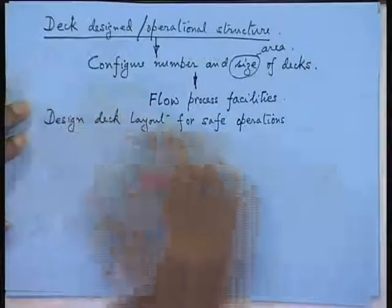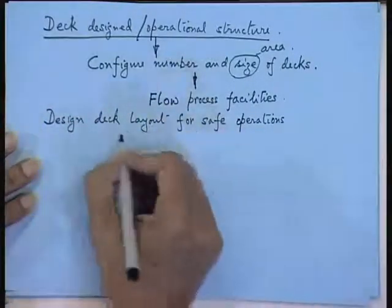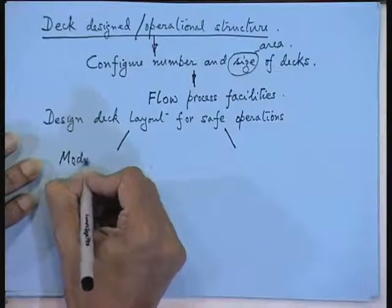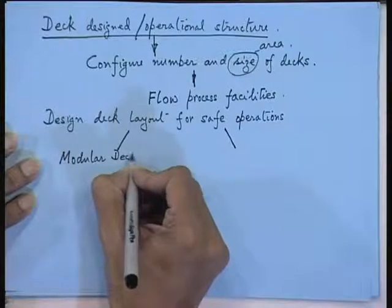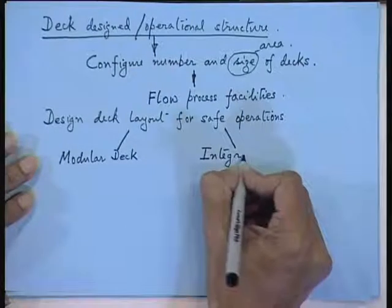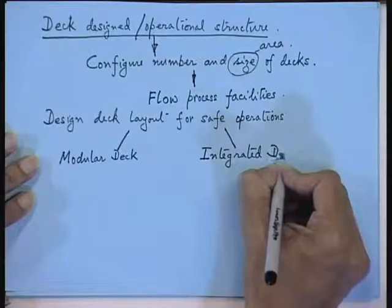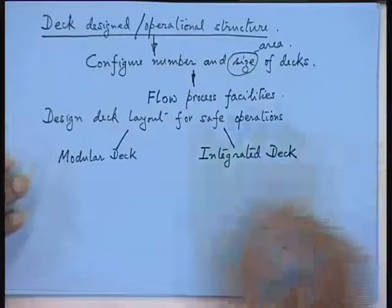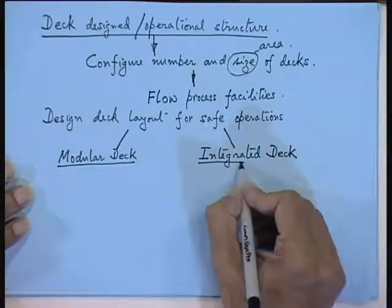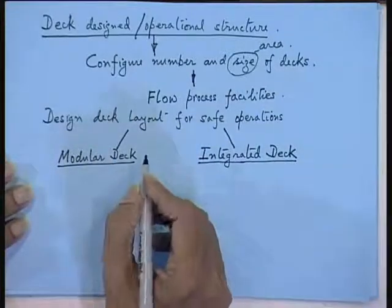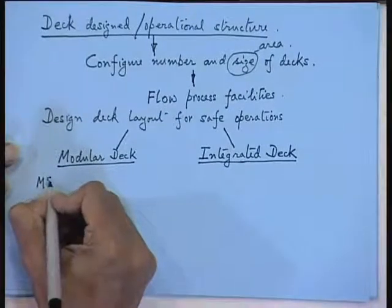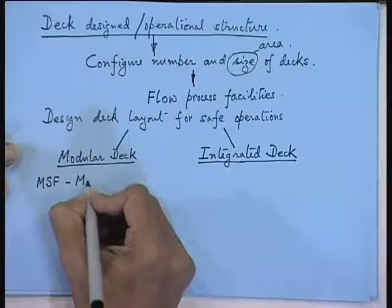Here you have to decide the decks. There are two types of decks you will find. One is called the modular deck and the other is called an integrated deck. Your structural design will actually vary based on these two types of decks that are normally found in jacket platforms — the modular construction or the integrated type. In the modular deck, the first thing you build is a Module Support Frame, in short called an MSF.